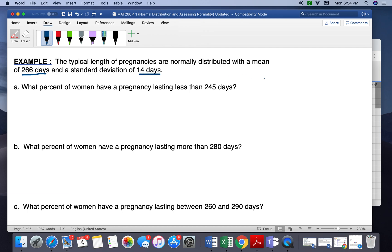So first when you get to these problems, we want to write down what we have. So the mean μ equals 266 and our standard deviation is 14.